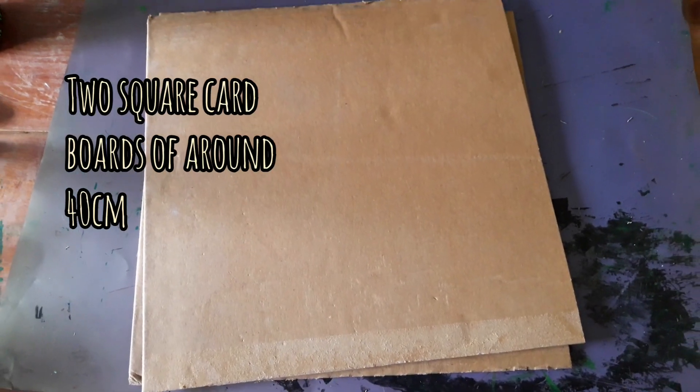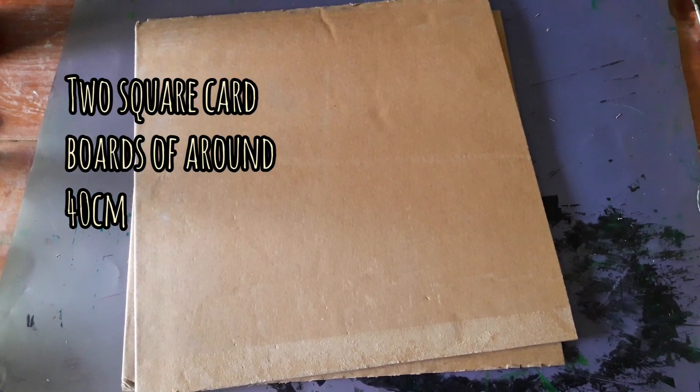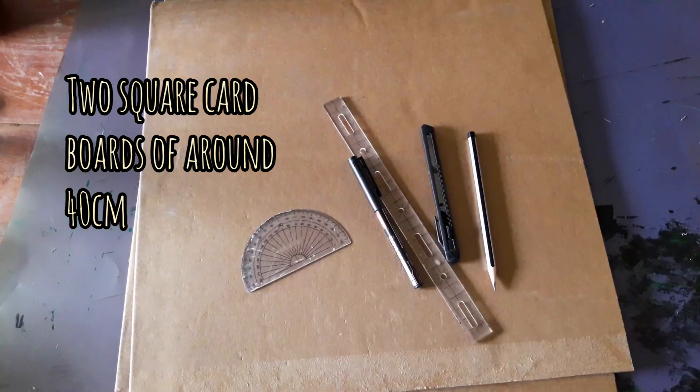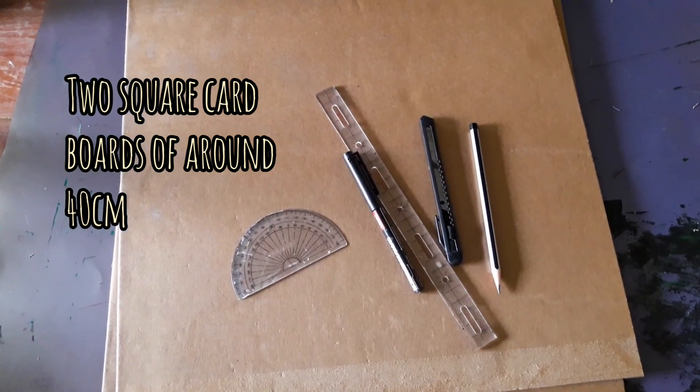Friends, materials which I have used for making Pitha Board are two square cardboard of around 40 centimeter from any old carton box.